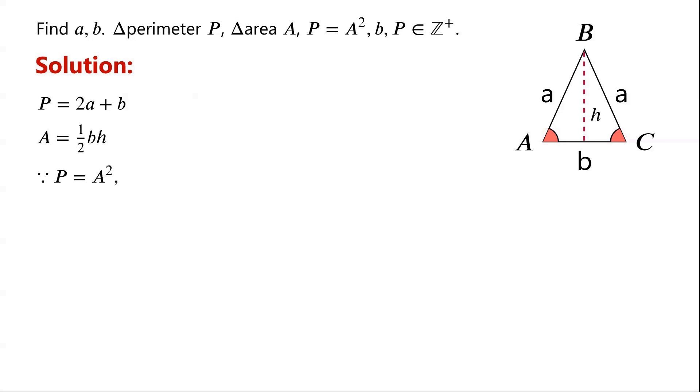As we are given that P equals A squared, so 2A plus B equals a quarter times B squared times H squared.